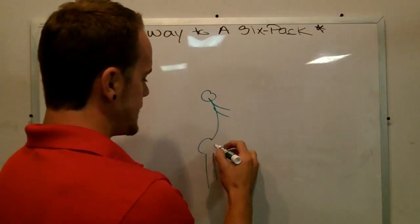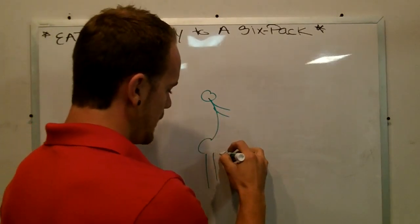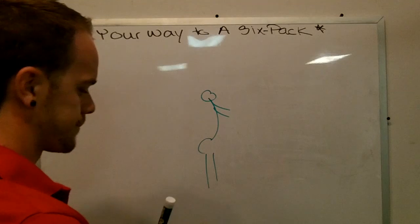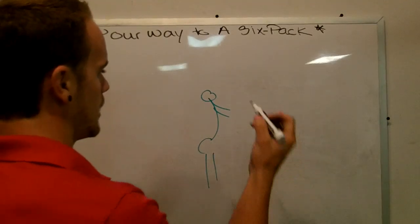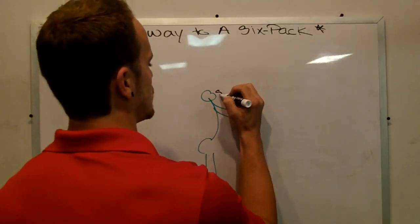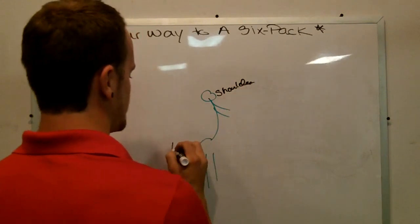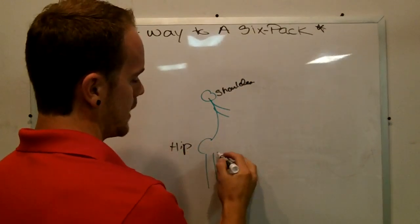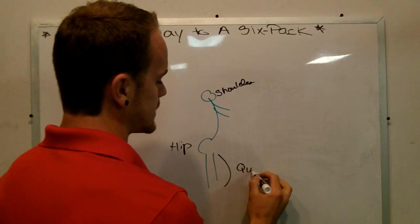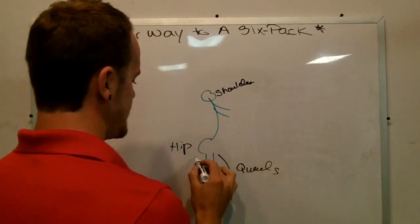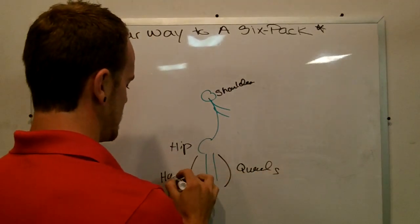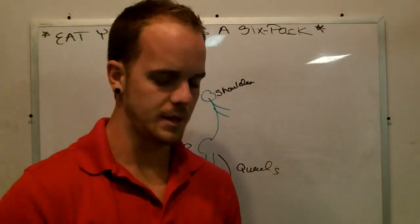But look, what happens is if you, these are your quads here. So this is your shoulder, this is your hip. These right here are your quads and these here are your hammies.